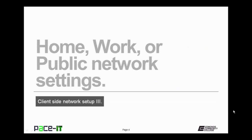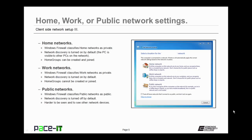Let's begin by discussing the difference between the home, work, and public network profiles. Home networks: Windows Firewall classifies home networks as private. Network discovery is turned on by default, meaning the PC is visible and discoverable by other PCs on the network. Home groups can be created and joined using this profile.